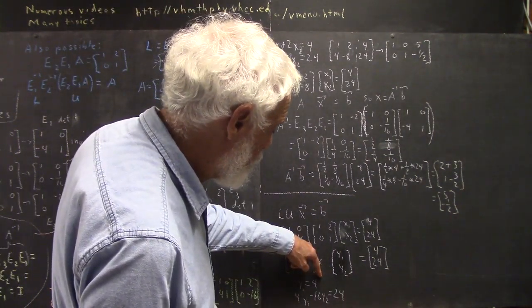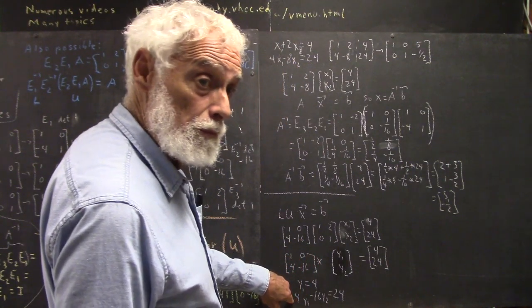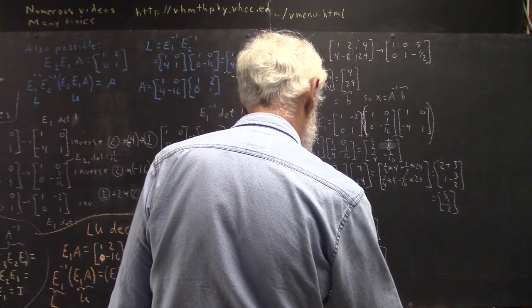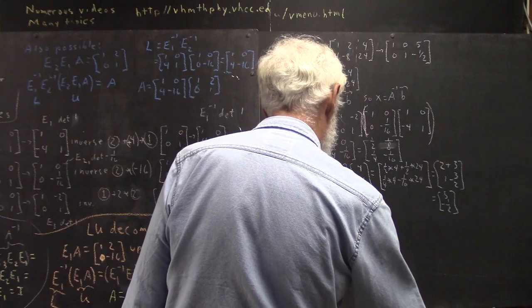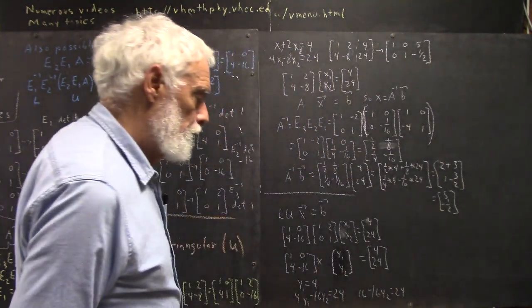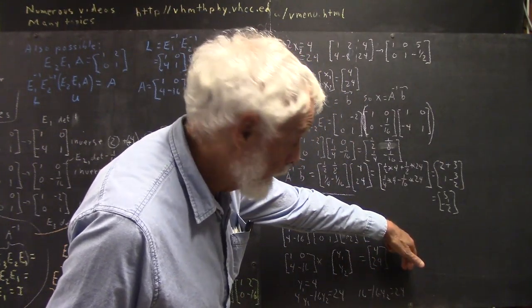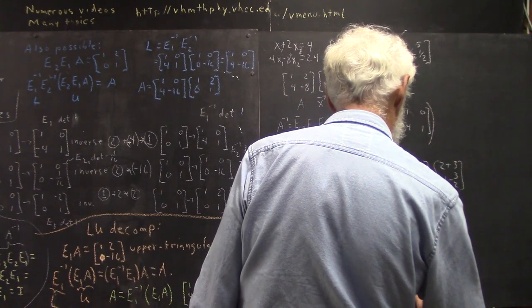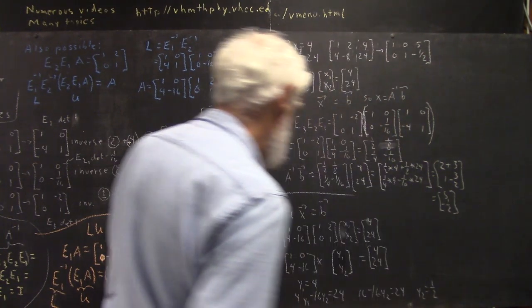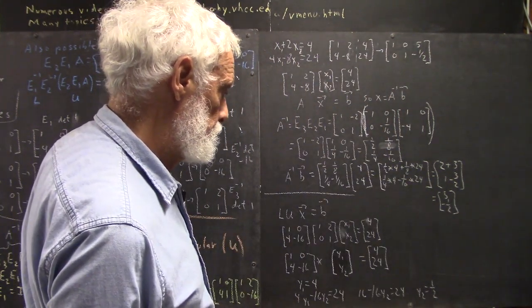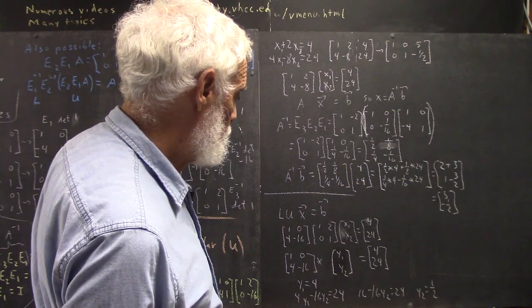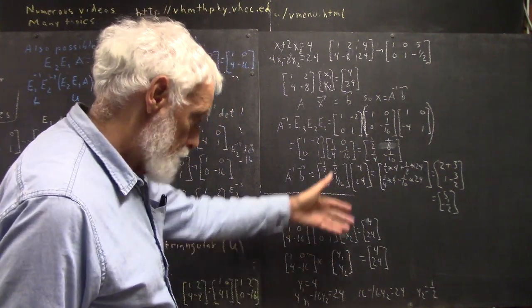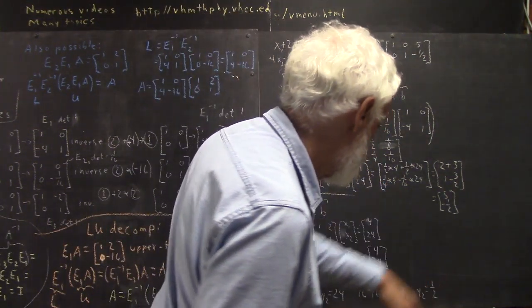That's a system we can easily solve by forward substitution. In other words, we get Y1 equals 4. Multiply the first row by the column, it's going to equal the first row of this column matrix. And then we have 4Y1 minus 16Y2 equals 24. Well, we just substitute the 4 in here for Y1, and we get 4 times Y1 is 16 minus 16Y2 equals 24. Well, subtract 16 from both sides, we're going to get negative 8 divided by negative 16, we get 1 half.